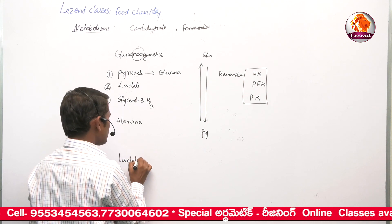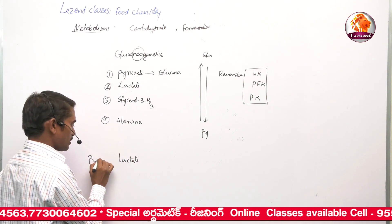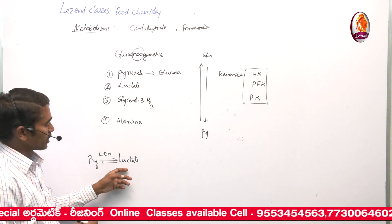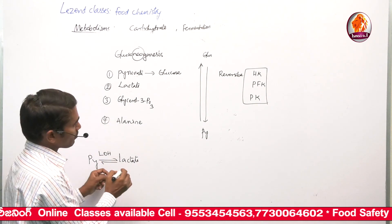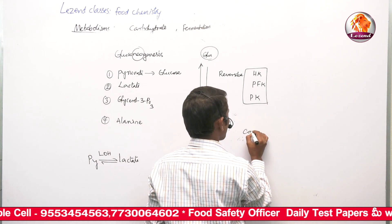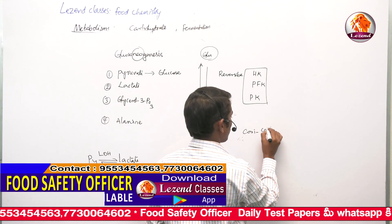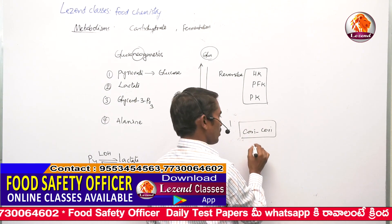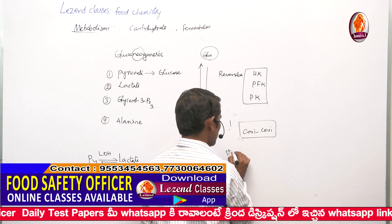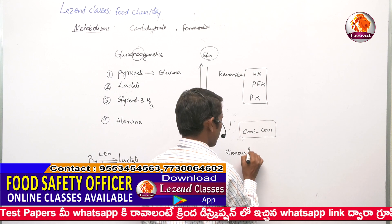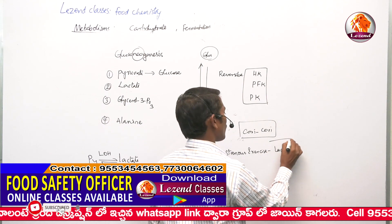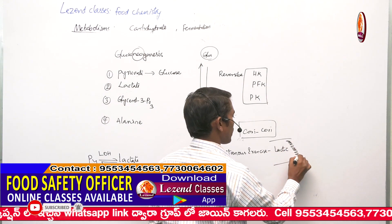There is an interconversion between pyruvate and lactate by the action of lactate dehydrogenase enzyme. Pyruvate gets converted into lactate, and lactate again gets converted into pyruvate, which can then reverse back to glucose in the liver. In skeletal muscles, during strenuous exercise, lactic acid accumulates, causing muscle fatigue.